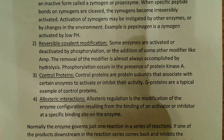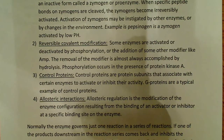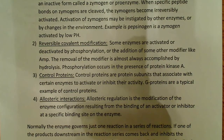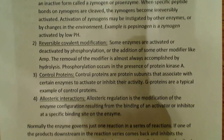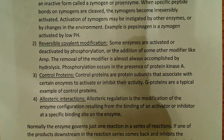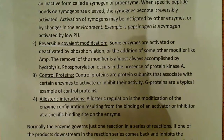The second type of regulation is reversible covalent modification. Some enzymes are activated or deactivated by phosphorylation — phosphorylation is very common if you've ever studied the metabolic pathways, such as glycolysis, gluconeogenesis, citric acid cycle, or the electron transport chain and oxidative phosphorylation. Phosphorylating different enzymes that you want to activate or deactivate is something phosphorylation is very good at. Some enzymes are also modified by the addition of other modifiers like AMP (adenosine monophosphate), and removal of the modifier is almost always accomplished by hydrolysis.